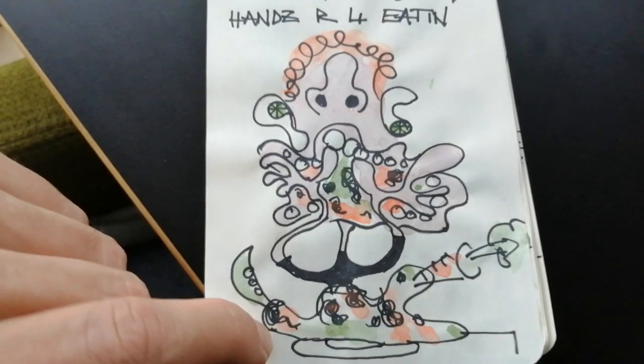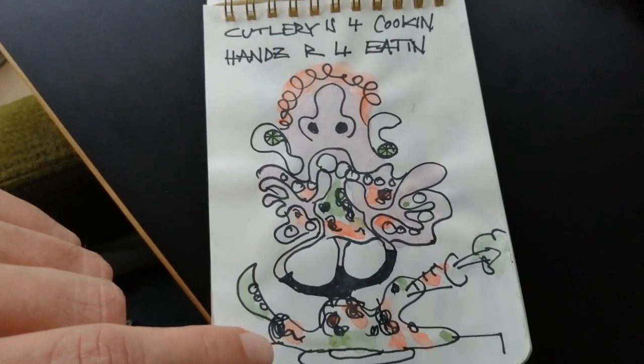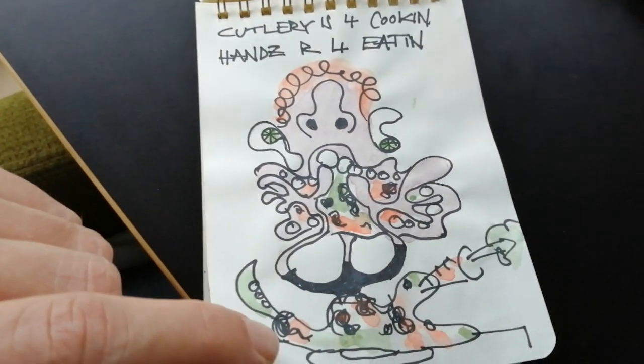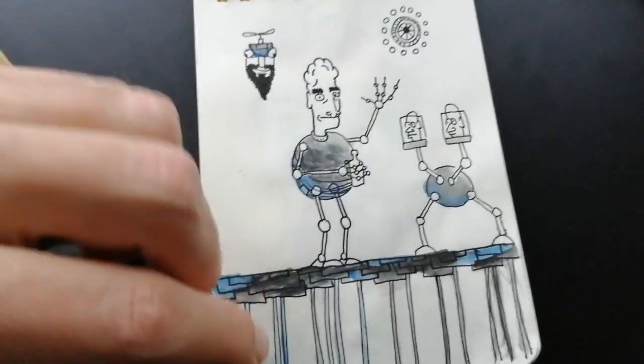Cutlery is for cooking. Hands are for eating. Sometimes I like to eat with my hands. Get to sense the food with fingers. It's really nice.